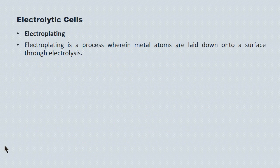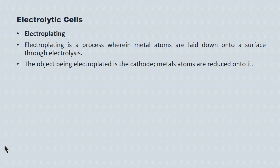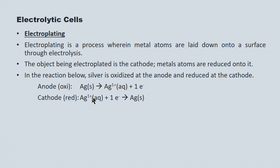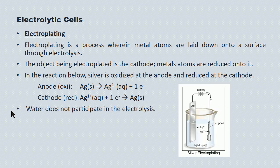Electroplating is another technology wherein metal atoms are laid down on the surface of some non-participating object through electrolysis. The object being electroplated is the cathode — it's a site of reduction where metal atoms are reduced onto the object, whether it be silverware, a car bumper, or otherwise. In the silver plating reaction, silver is oxidized at the anode and reduced at the cathode. At the anode, silver atoms are oxidized into silver ions; at the cathode, silver ions are reduced back into silver atoms and plated onto whatever object you're dealing with. Water does not participate in the electrolysis.